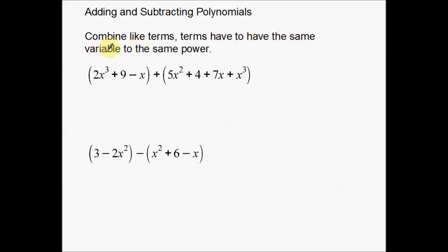The terms have to have the same variable to the same power. Now, what's going to happen is we're going to look at these in a couple of examples, and that's basically what we're going to look for. We're going to look for the same variable to the same power, and then those are going to be like terms. Those are the ones we're actually going to combine together. We can't combine everything into one nice, neat little term that doesn't quite work that way.